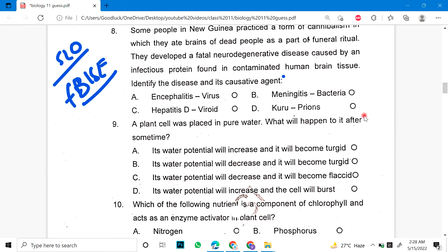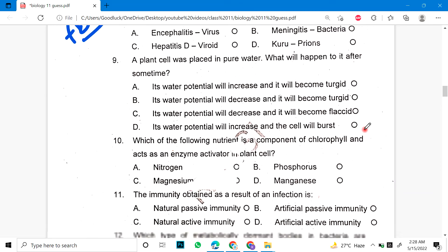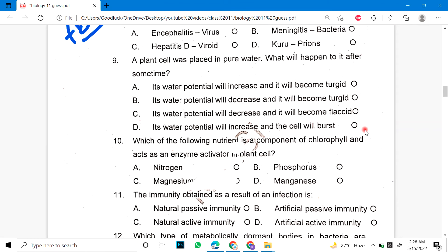Number 9: If plant cell was placed in pure water, what will happen to it after some time? Number 10: Which of the following nutrient is a component of chlorophyll and acts as enzyme activator in plant cell?